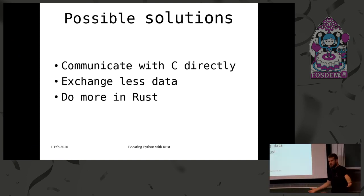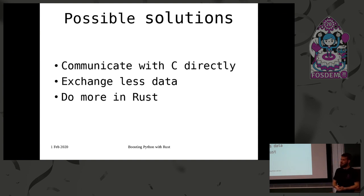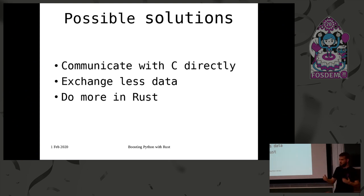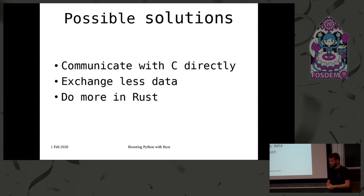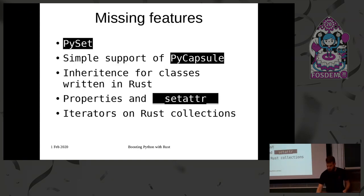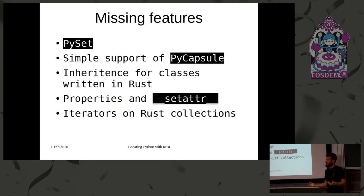We have many possible solutions. One is to communicate with C directly — there's a Python standard library feature called Capsules that allows you to share an API of function pointers between C extensions, so you can target the C API with Rust and use Capsules to communicate with the C layer directly. You can also exchange less data by moving up an abstraction layer — give the file name instead of the file contents, for example. And in general, just do more in Rust.